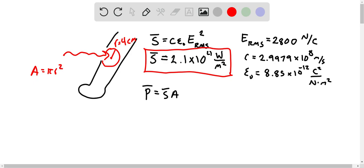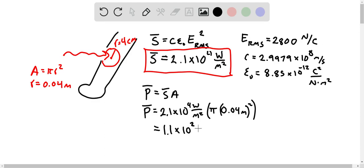Thing to keep in mind though, is that all of our units so far have been using meters, so we want to convert from 4 centimeters into meters. R is then 0.04 meters. And so plugging that in for the average power, we get 2.1 times 10 to the 4th watts per meter squared, multiplied by pi times 0.04 meters squared. And then plugging all of that in, we get a power that's about 1.1 times 10 to 2 watts.